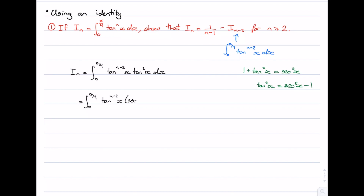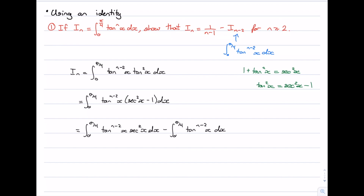When we expand that out we get two integrals. We separate them: the integral from 0 to π/4 of tan^{n-2}(x) · sec²(x) dx, minus the integral from 0 to π/4 of tan^{n-2}(x) dx. You can see that the second integral is actually I_{n-2}.